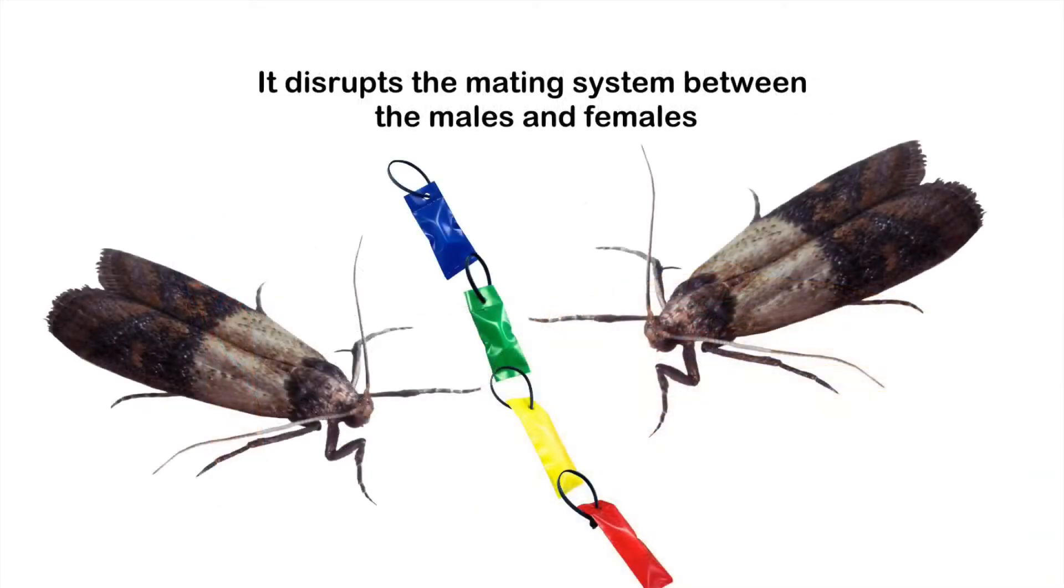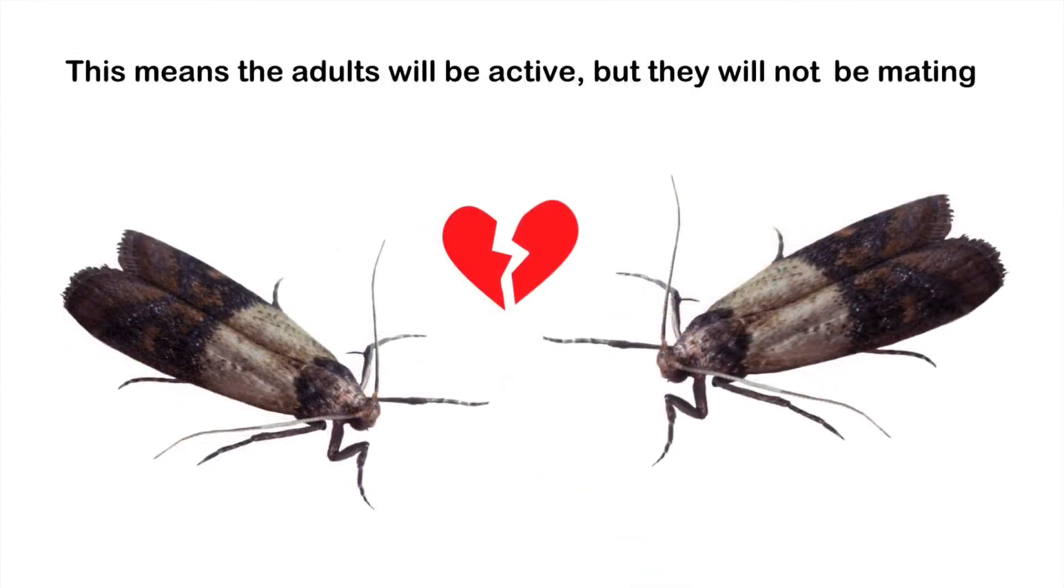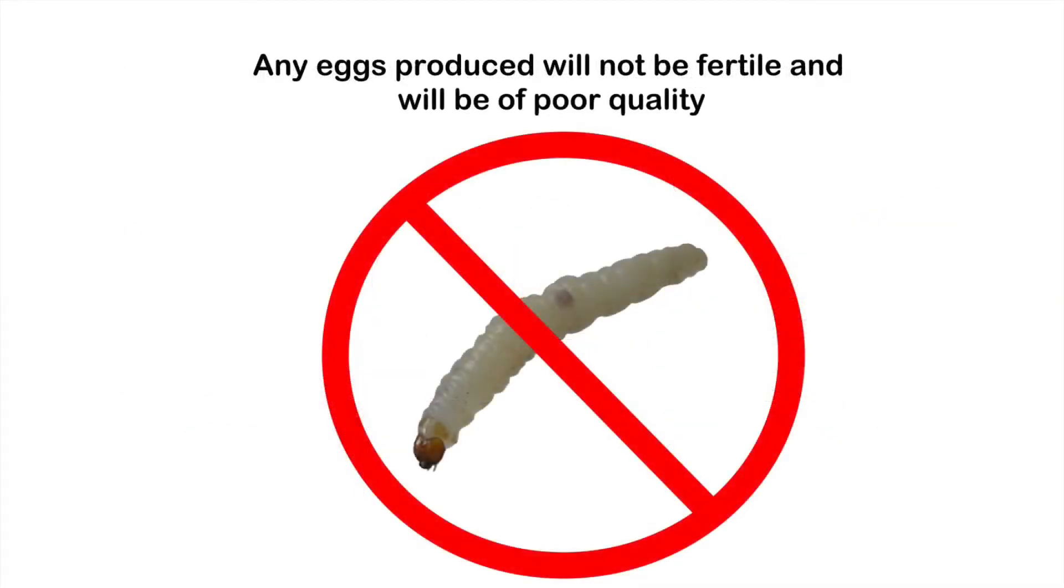It disrupts the mating system between males and females. This means that adults will be active, but they will not be mating. Any eggs produced will not be fertile and will be of poor quality.